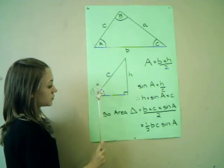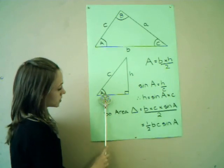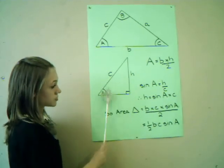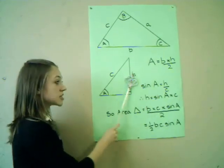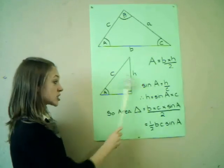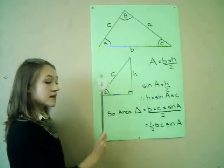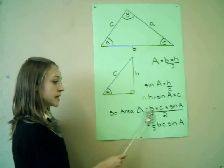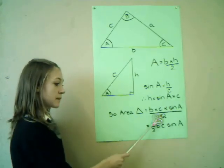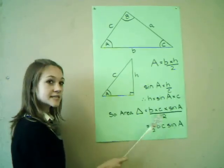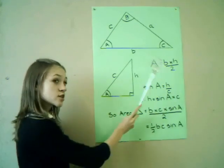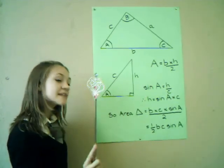So we've got A, the angle here, so we have the opposite and the hypotenuse, so we have sine A equals H over C. Therefore, H is sine A multiplied by C. So the area of the triangle is B times C times sine A divided by 2. So we have half BC sine A. So we have actually used it, but just in a slightly different way.